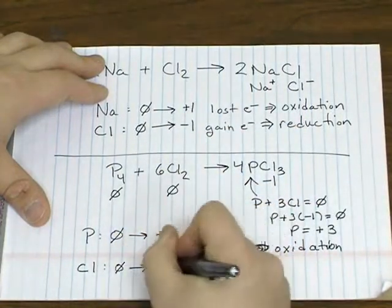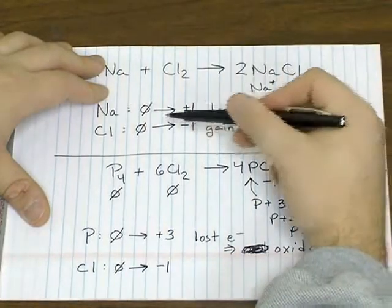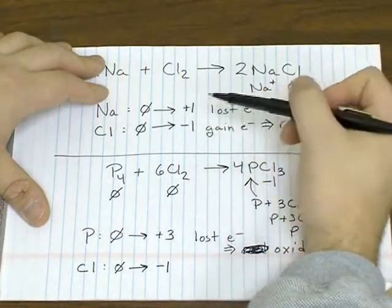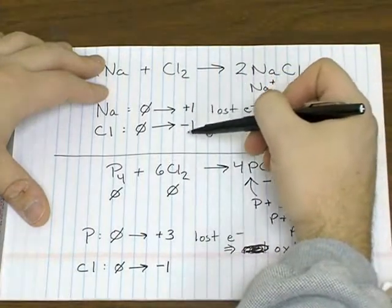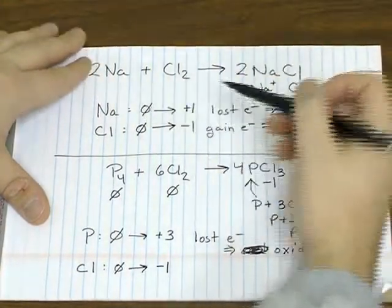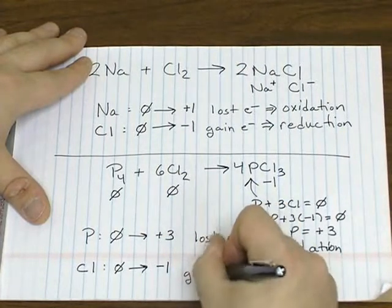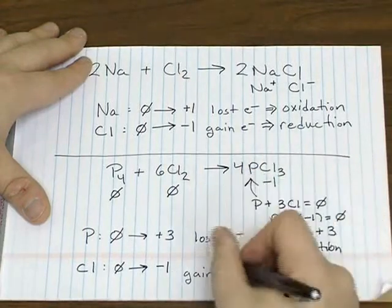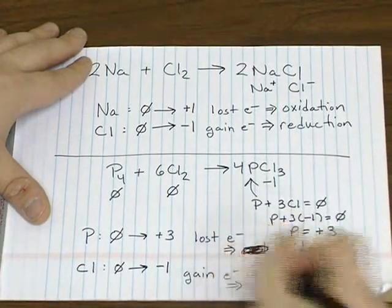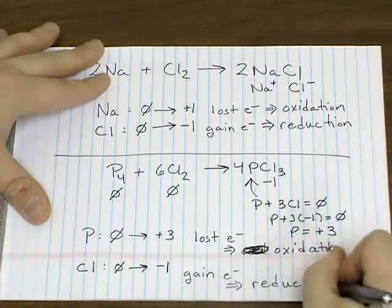Chlorine is going from zero to a negative one oxidation number. But again, it's just like going from a zero to a negative one charge. We can treat these fake charges just like we treat the real charges in this example. So to go from zero to negative one, whether it's a real charge or a fake charge. And again, it's a fake charge here because it's a covalent compound. That requires a gain of electrons. So this one's the reduction.